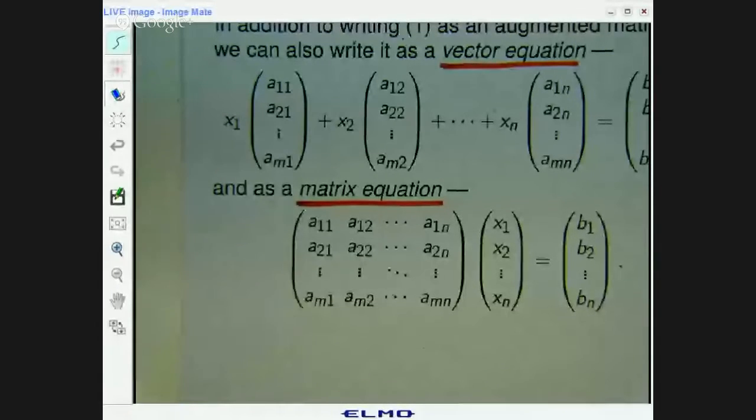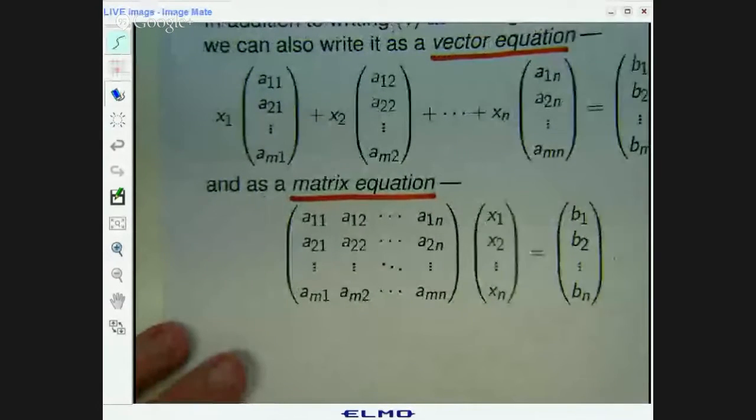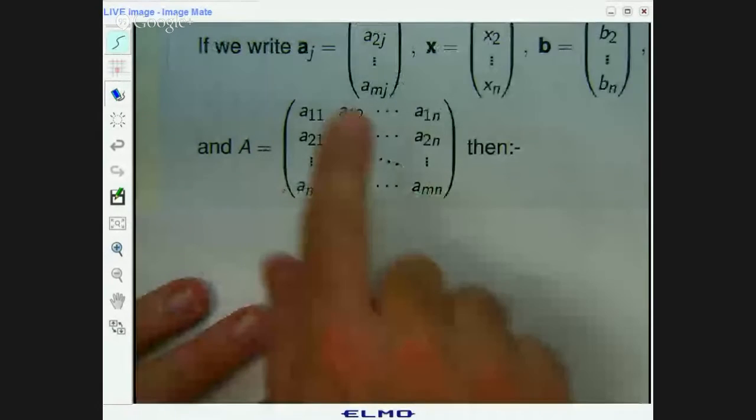So that's three ways of writing a linear system. Firstly, via an augmented matrix, via a vector equation and via a matrix equation. Now you may look at those and you might say, well, hang on, Chris, how has that simplified things? Well, I'm glad you asked.